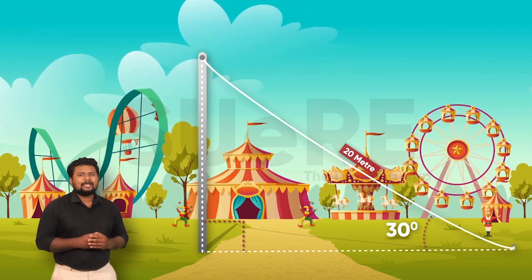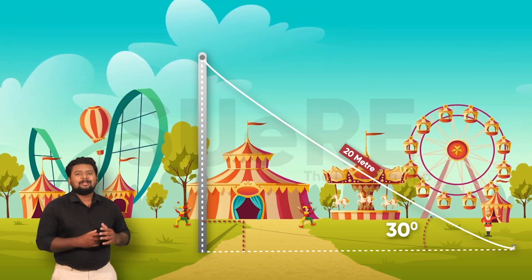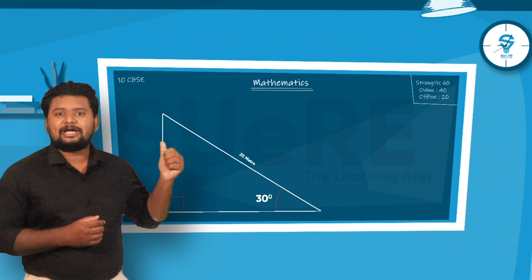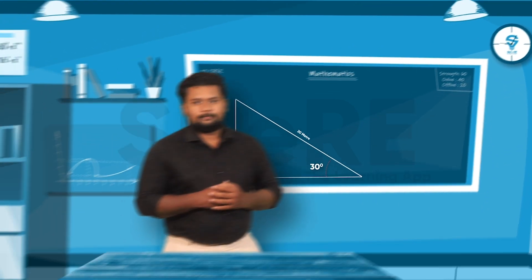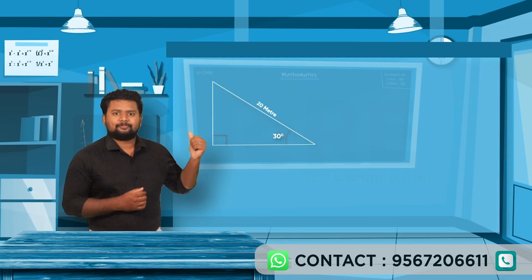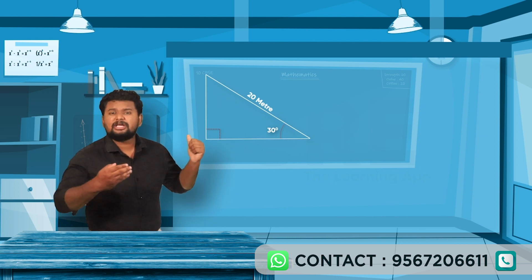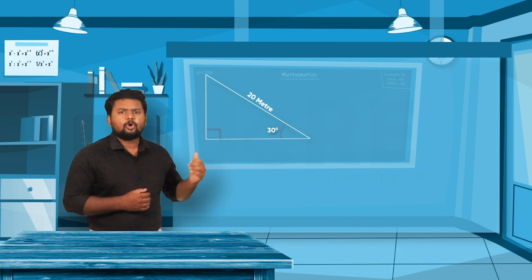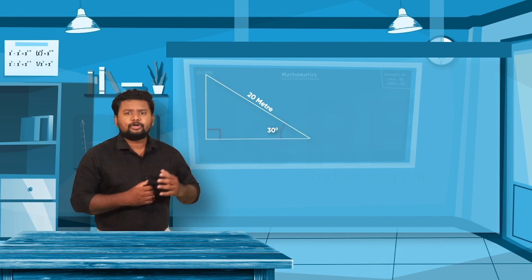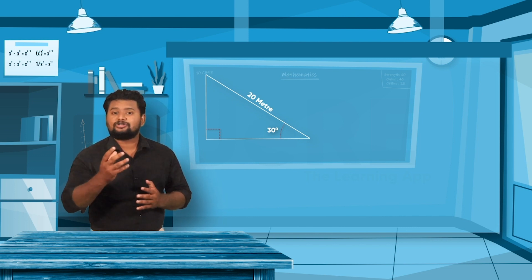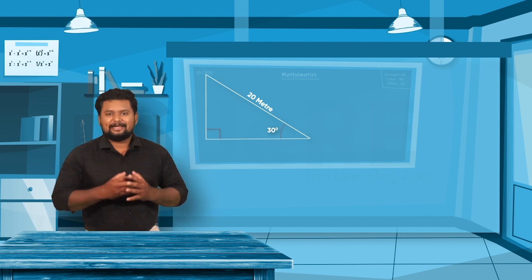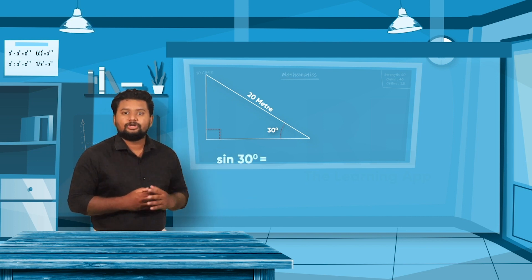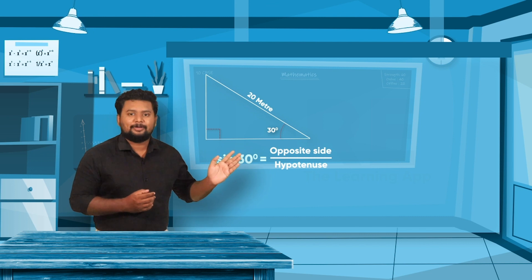We calculate the height of the pole. We consider the opposite side — the pole — and the hypotenuse, which is the rope of 20 meters. The opposite side and hypotenuse are connected by the trigonometric function sine. So we take sine 30, which equals opposite side divided by hypotenuse.